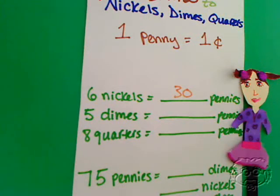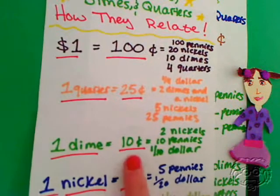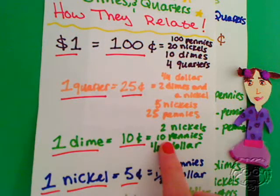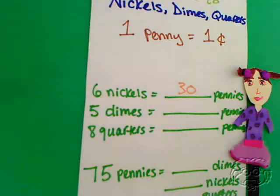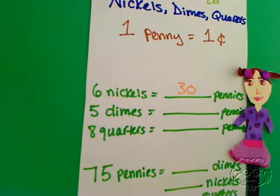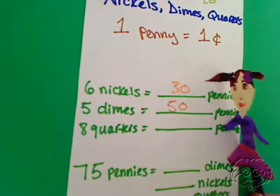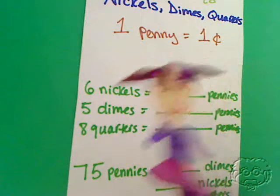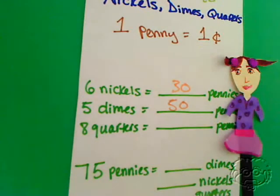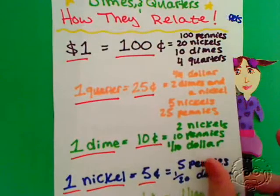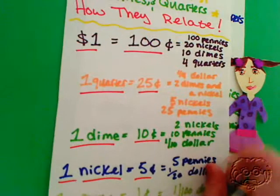How about dimes? Back to the cheat sheet. Dimes — 10 cents, or 10 pennies. So for 5 dimes, if each one is 10 pennies, we can multiply 5 times 10. 5 times 10 is 50. So 5 dimes equals 50 pennies.